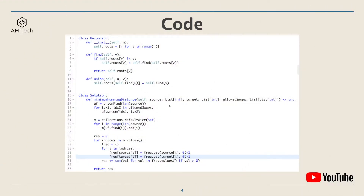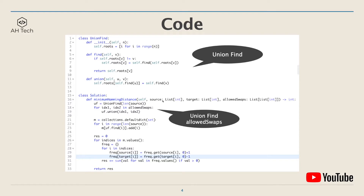There are two main parts in the code. First, create the Union-Find class and implement the find and union APIs. Second, create the Union-Find data structure on the allowSwaps array.